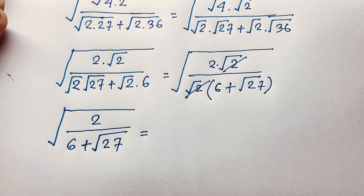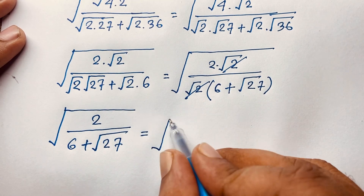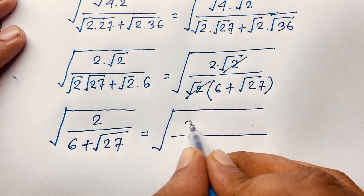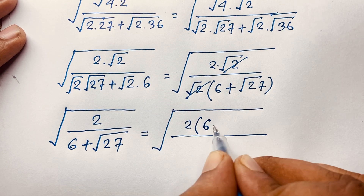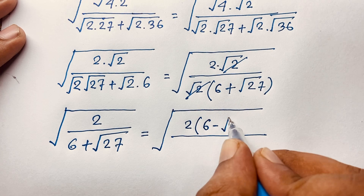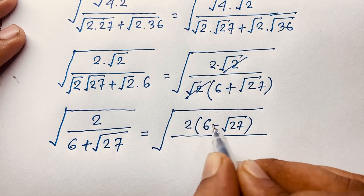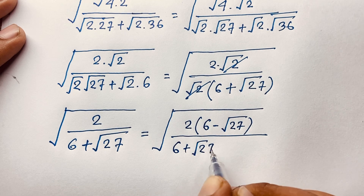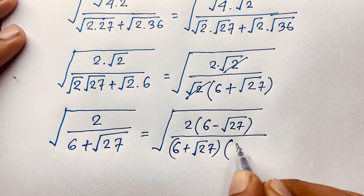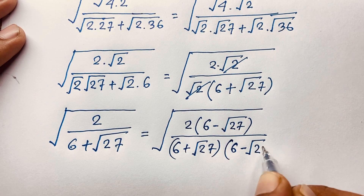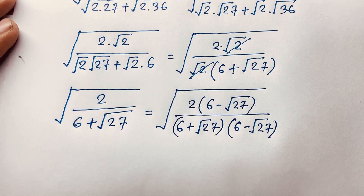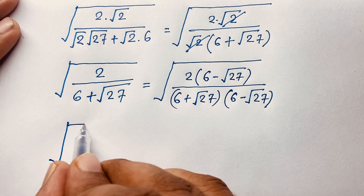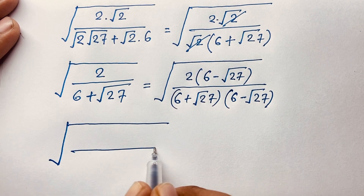Square root 2 is common. We rationalize: multiply numerator and denominator by the conjugate 6 minus square root 27. So we multiply below by 6 minus square root 27, giving 2 times (6 minus square root 27) in the numerator.